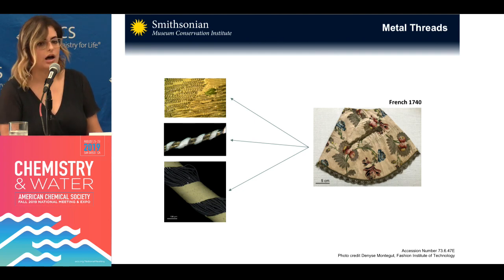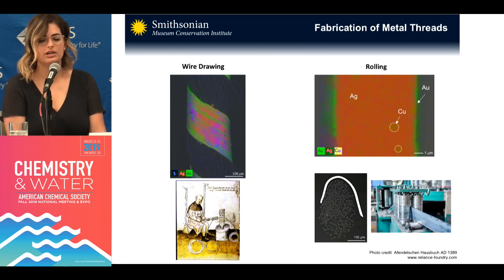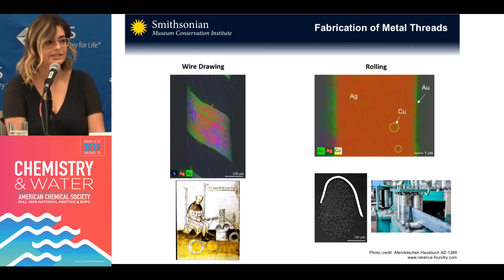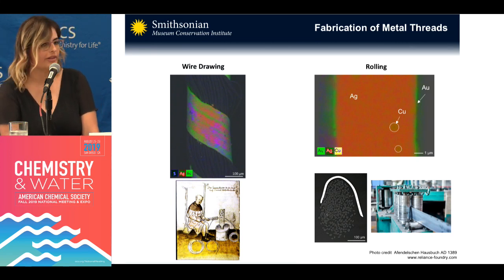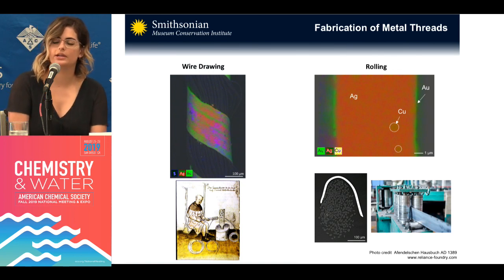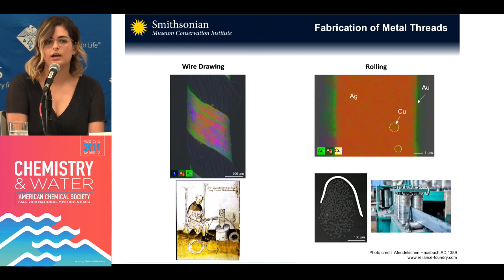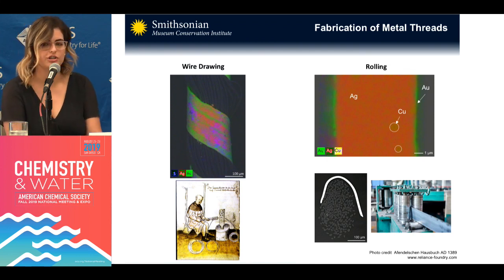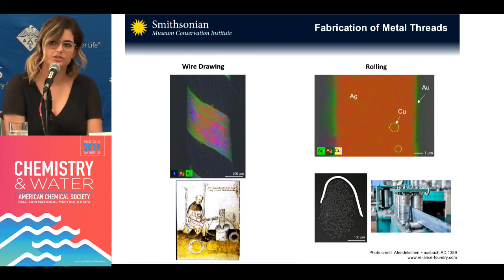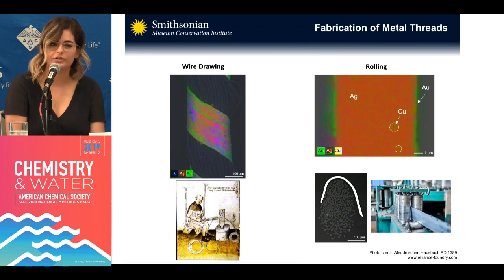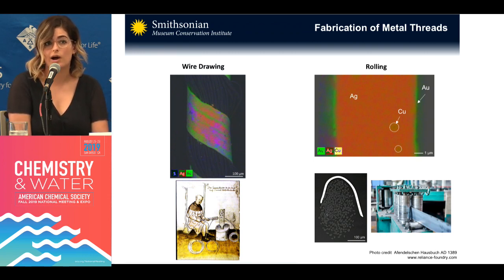On the next slide, we're using scanning electron microscopy and energy dispersive X-ray spectroscopy to analyze the chemical composition of these threads. On the left side, it's a compositional map of the surface of this thread. In red and green, you can see silver and gold. What you actually see are these striations. Sulfur is also displayed there, which is a corrosion product. The striping between the silver and gold at this uncorrelated location is representative of the technique of wire drawing.